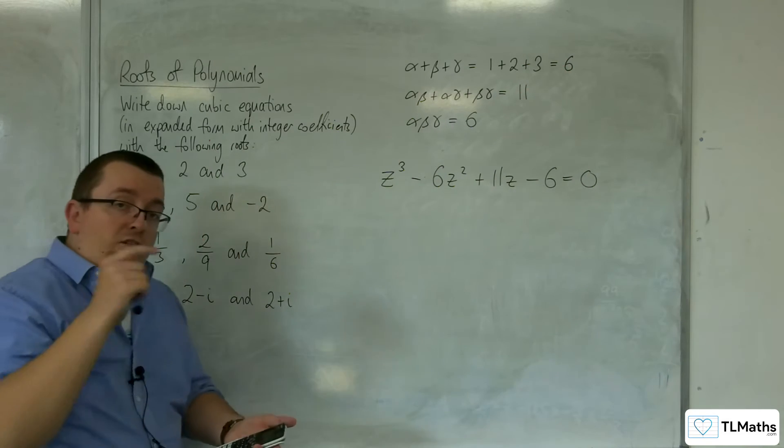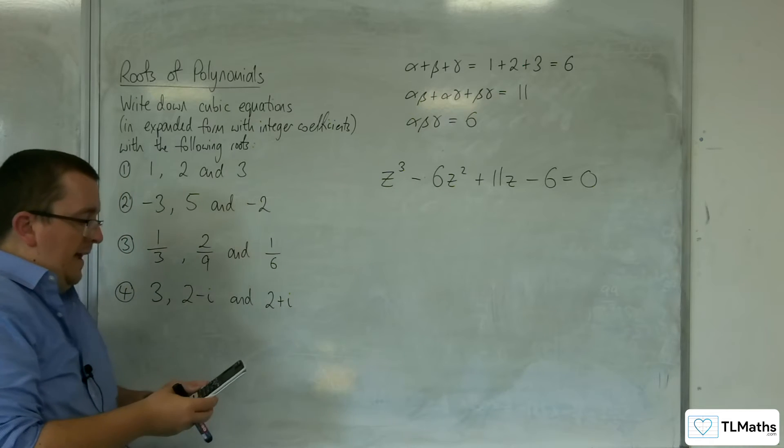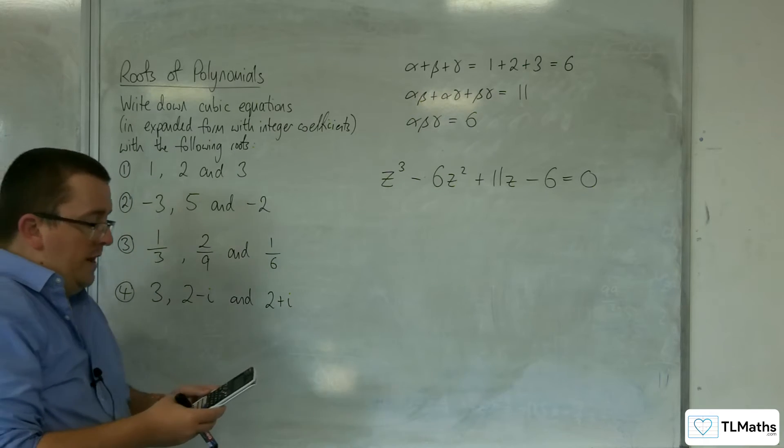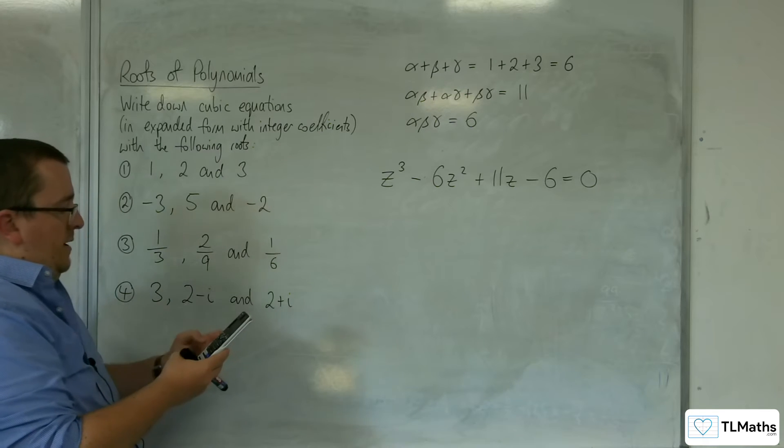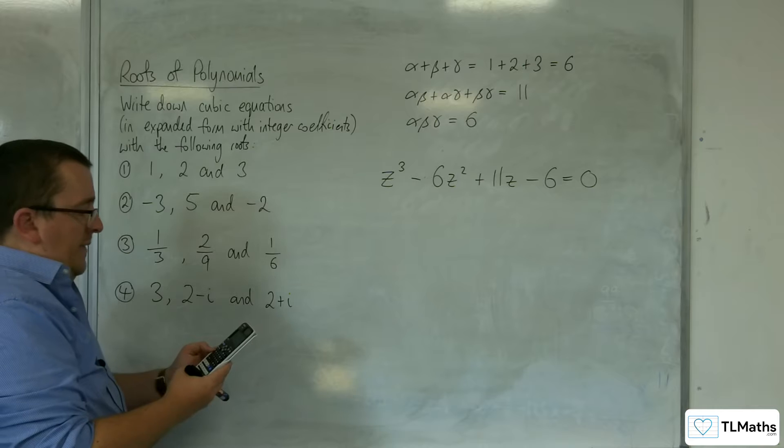Then obviously we can check on our calculator. So if we go to menu and then scroll down to option A, polynomial, degree 3. We can type this in. So 1, minus 6, 11, and minus 6. And then press equals.